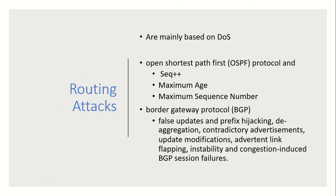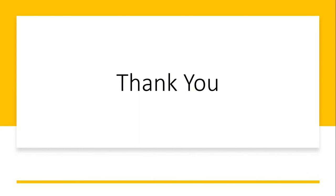Routing attacks are mainly based on denial of service. OSPF (Open Shortest Path First) protocol is used to carry out this kind of attack, with techniques involving sequence number manipulation. There is also a vulnerability to perform a DoS attack based on the Border Gateway Protocol (BGP). Thank you for watching.